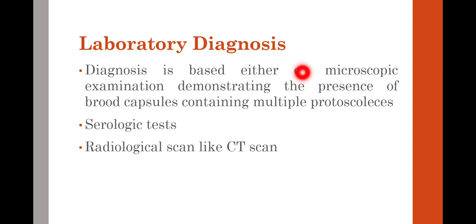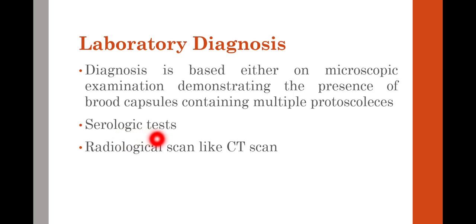Laboratory diagnosis of the hydatid cyst is based on microscopic examination demonstrating the presence of brood capsules containing multiple protoscoleces, usually from biopsy material examined under a microscope. Serological tests are also used for the detection of antibodies produced against Echinococcus granulosis by the immune system. Finally, the cyst can be detected by radiological scans such as CT scan or ultrasound. These are the three common approaches used for diagnosis of Echinococcus granulosis infection or hydatid cyst disease.